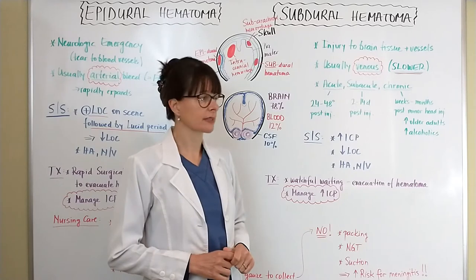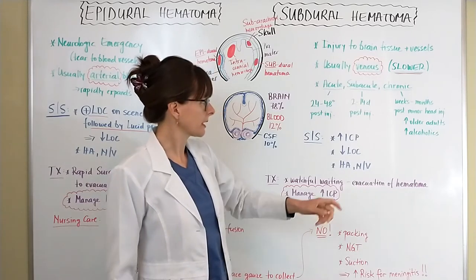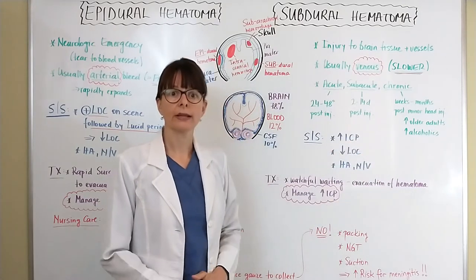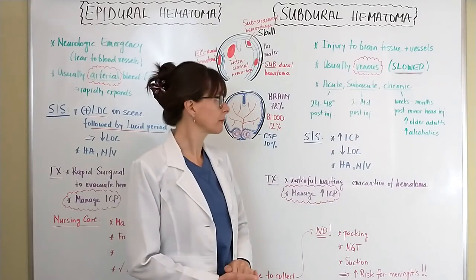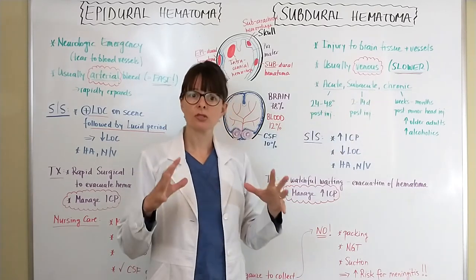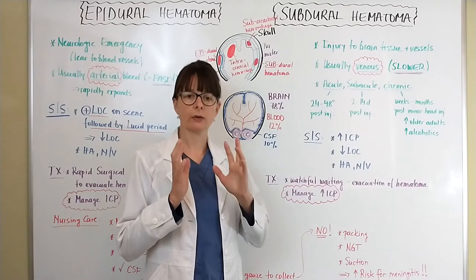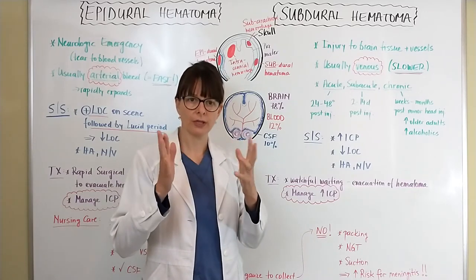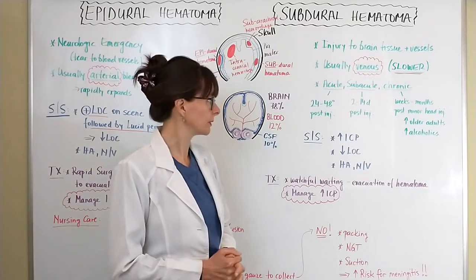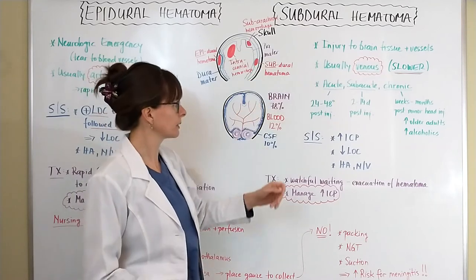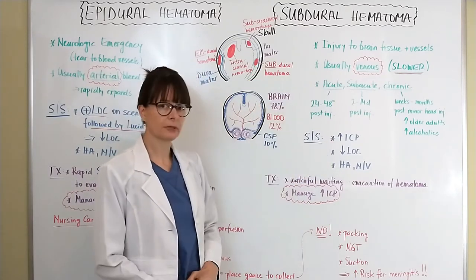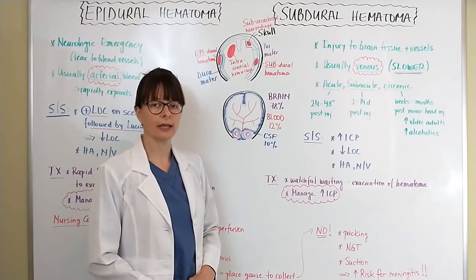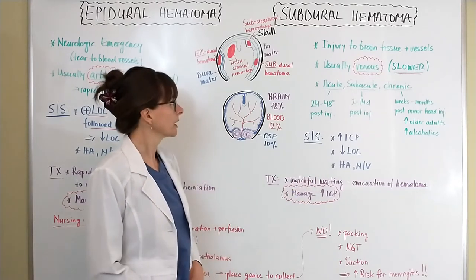Older adults and patients with alcoholism are at increased risk for subdural hematomas, specifically chronic ones, because their brain tends to be atrophied. When the brain is jarred inside the skull there is more room for it to move, and a greater chance for blood vessels to rupture. Signs and symptoms include signs of increased intracranial pressure, decreased level of consciousness, headache, nausea, and vomiting.